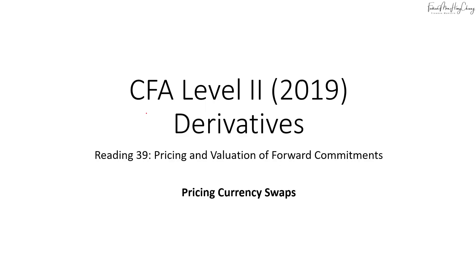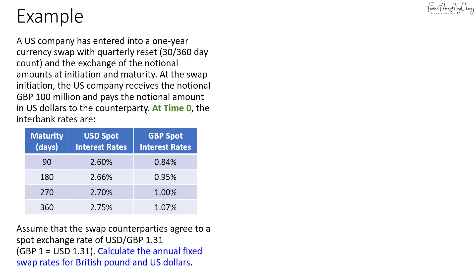Now on to pricing currency swaps. A currency swap is an agreement where two counterparties exchange principals and interest in two different currencies. Here we have a US company that has entered into a one-year currency swap with quarterly resets based on a 30/360 day count and the exchange of notional amounts at initiation and maturity. At swap initiation, the US company receives the notional of 100 million pounds and pays the notional amount in US dollars to the counterparty.